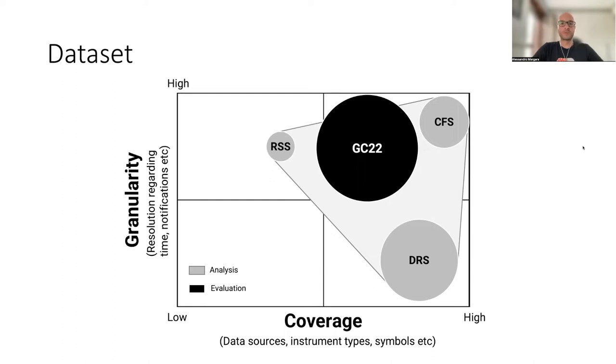So the three data sets we use for the analysis were rate statistics represented as RSS in this figure. These are statistics about the rate per second coming from six different sources captured over two trading days. Then we have the global statistics, DRS, in this figure. These are daily statistics, so the granularity is lower, daily statistics about sources, the type of financial instruments and the symbols they publish. And then we have feed examples, CFS here, which are over 300,000 event notifications published by 18 different sources. So high granularity and high diversity, high coverage.